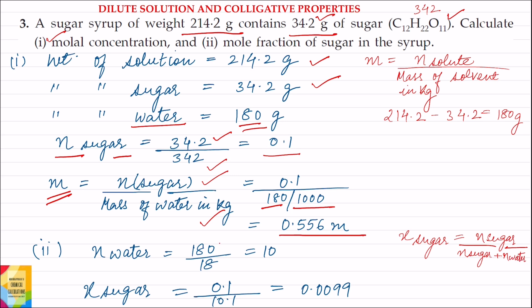Moles of water equals weight of water divided by molecular weight of water, which equals 10 moles. So the mole fraction of sugar equals moles of sugar (0.1) divided by total moles: 0.1 plus 10, which equals 10.1. Therefore, mole fraction = 0.1 divided by 10.1, which equals 0.0099.